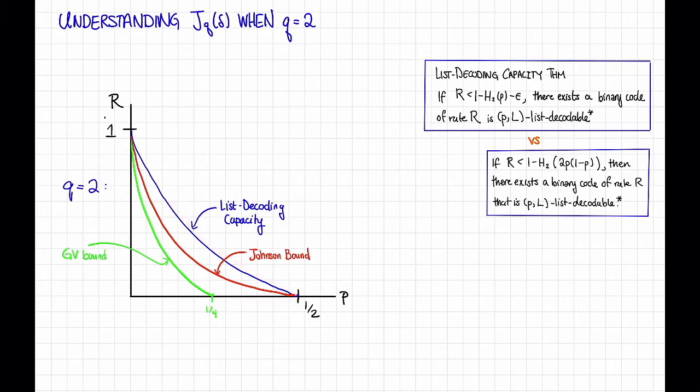Moreover, the Johnson bound is, in some sense, more general because it's not just an existence result — it gives us a hint of how to achieve it. We just need to come up with a code of good distance. So that's what the situation looks like for q equals 2.